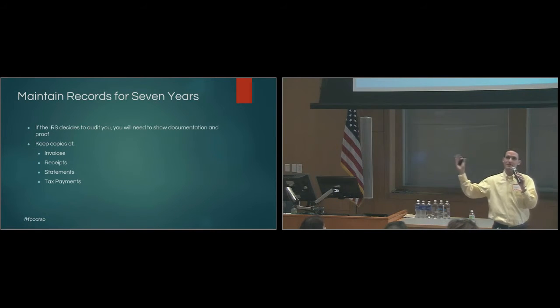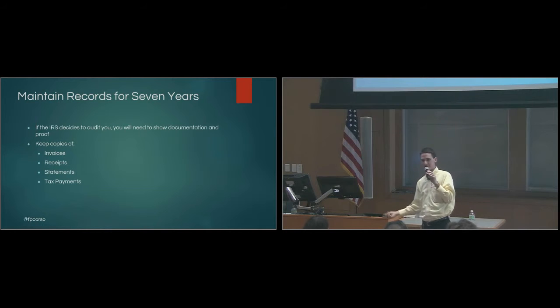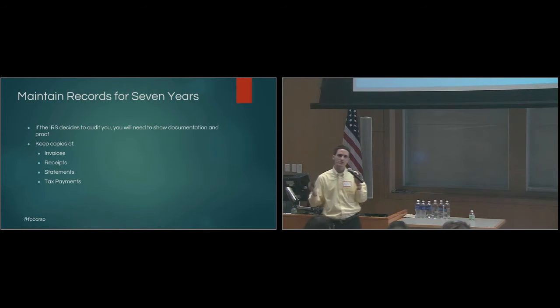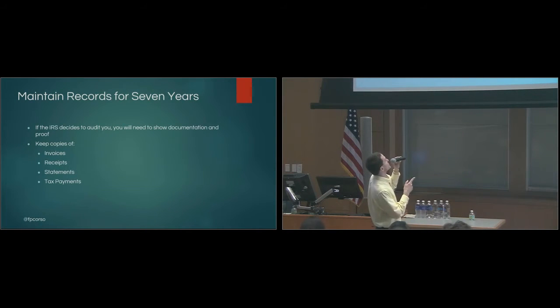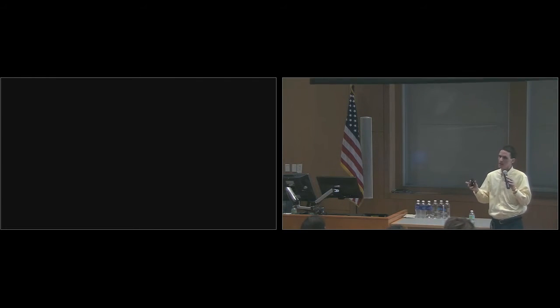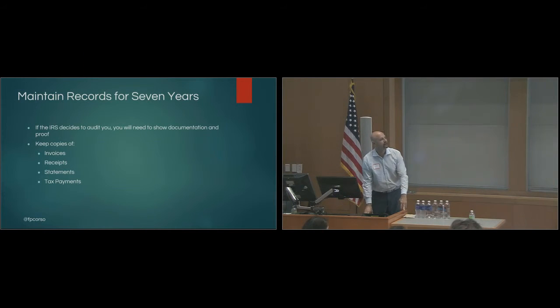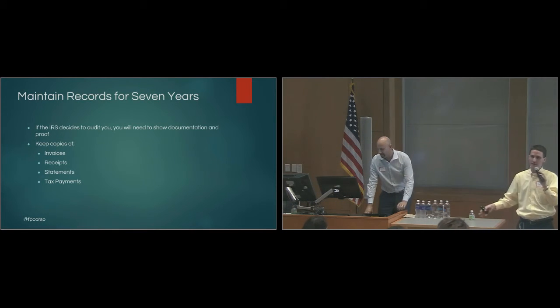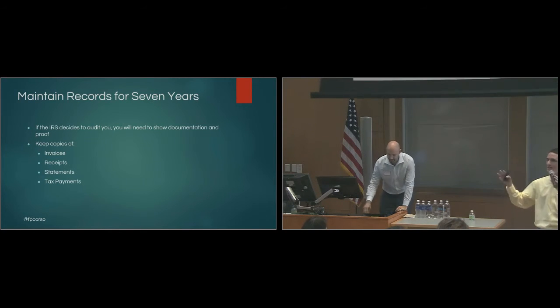So you want to maintain your records. If you keep your receipts all year and then you throw them out at the end of the year and then IRS audits you the following year, you're not going to have those receipts anymore. So you want to keep those receipts and all of your documentation usually seven years. If they decide to audit you, you'll need to show documentation. So keep copies of invoices, receipts, statements, tax payments, etc. Anything that goes into your taxes at the end of the year that you might need to show proof on. So I usually keep a filing cabinet. I have one at my desk at my home office and I pretty much just keep all of my documentation for the business in that filing cabinet. At this point now I have two filing cabinets, but it's usually best practice just to keep all your documentation in one place and that way you have it.